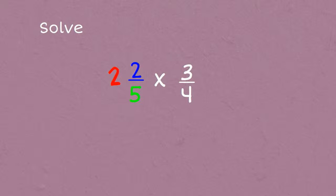Now let's solve two and two-fifths times three-fourths. We'll first turn the mixed number into an improper fraction, which gives us twelve-fifths. Then we multiply that by three-fourths, multiplying both the numerator and the denominator, and getting thirty-six-twentieths, which is an improper fraction.